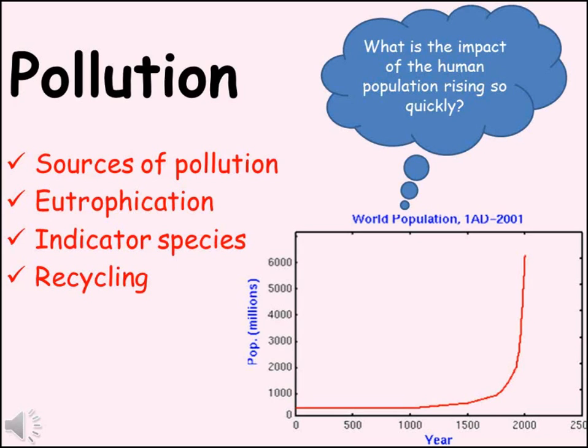We'll look at the sources of pollution, eutrophication as an example of pollution caused by modern agriculture, and also see how indicator species can be used to inform us about pollution levels. We'll also look at how recycling is important in relieving some of the pressure a growing population puts on limited resources.